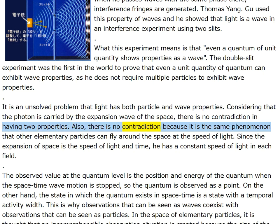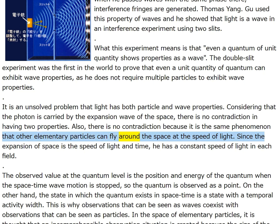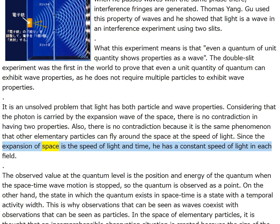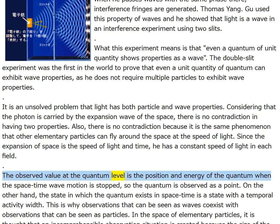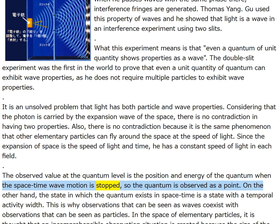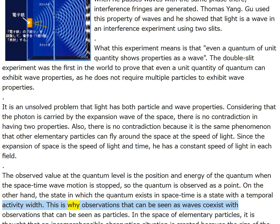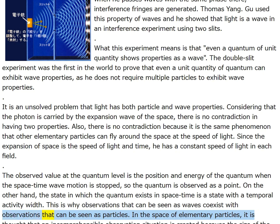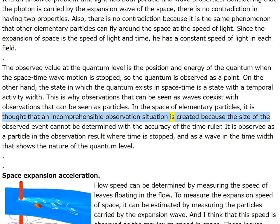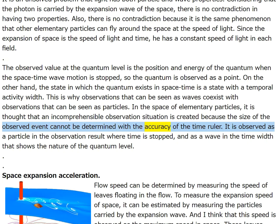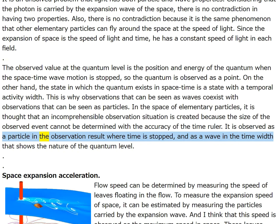There is no contradiction because it is the same phenomenon that other elementary particles can fly around space at the speed of light — the expansion of space is the speed of light and time, giving a constant speed of light in each field. The observed value at the quantum level is the position and energy of the quantum when the space-time wave motion is stopped, so the quantum is observed as a point. The state in which the quantum exists in space-time is a state with a temporal activity width. Incomprehensible observation situations arise because the size of the observed event cannot be determined with the accuracy of the time ruler.